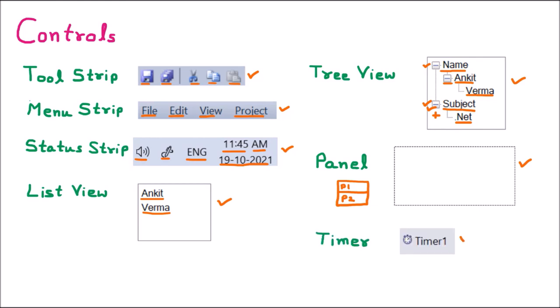The next control is the timer. There is some code that runs in the background, and for that we use the timer. For example, if you want your program to stop after exactly 30 minutes, you start the timer and the program closes after that. Or in an online exam, a timer starts when you begin, and when it counts down to 40 minutes, the form is automatically submitted. The timer is a background control — you cannot see it in the front end, it runs behind the scenes.